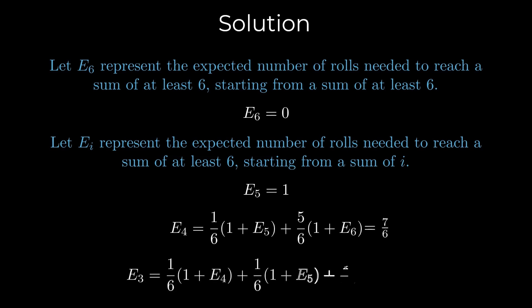Similarly, E3 is given by this equation. The first term represents the case where the current roll results in a one. The second term represents the case where the current roll results in a two, and the final term represents the case where the current roll results in a value greater than two. Using the previously calculated values, this evaluates to 49 over 36.